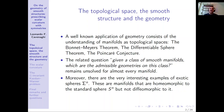A well-known application of geometry is its usage in understanding manifolds as topological spaces, as seen in the classical Bonnet-Myers theorem, the differentiable sphere theorem, and more recently the Poincaré conjecture. But the related question — given a class of smooth manifolds, which are the admissible geometries on this class — remains unsolved for almost every manifold.